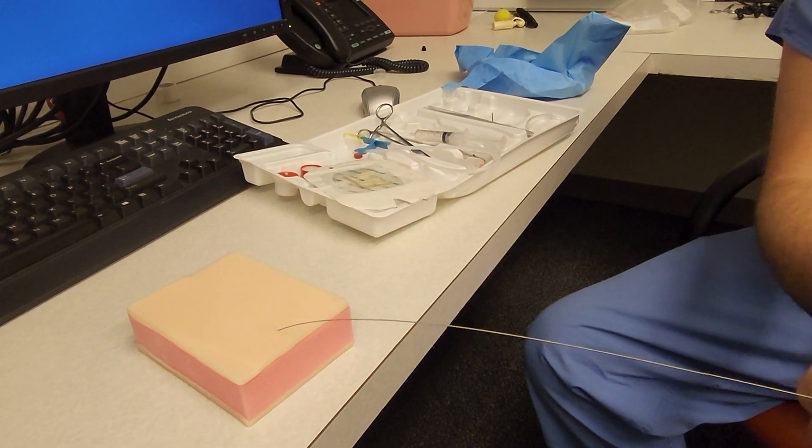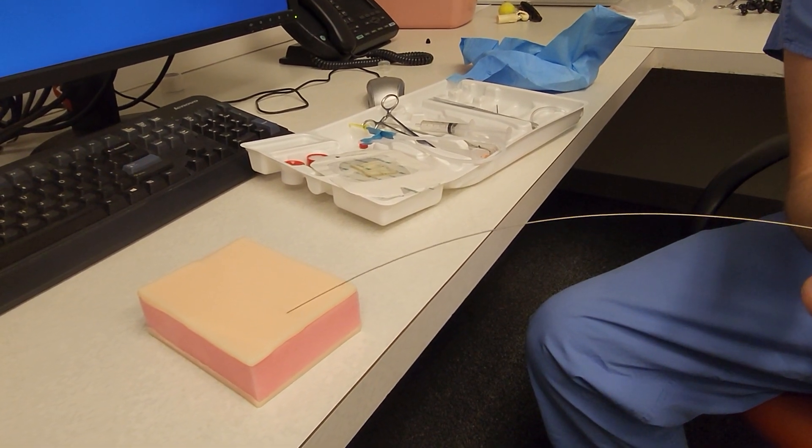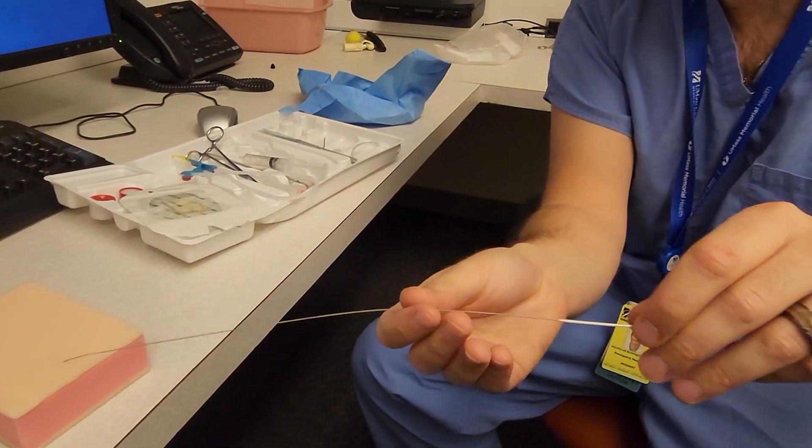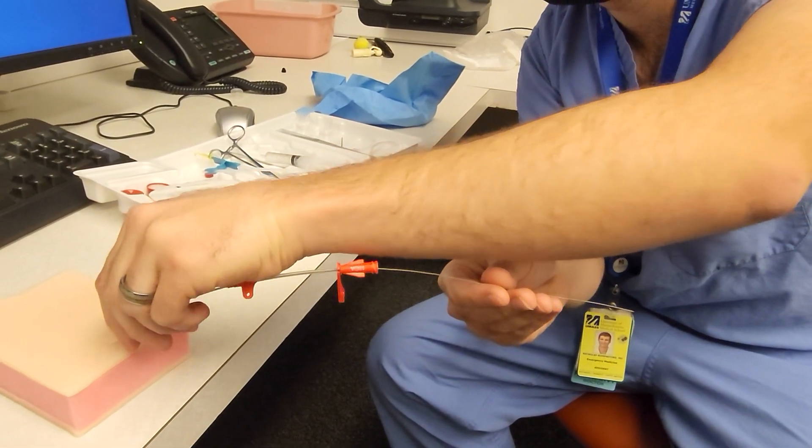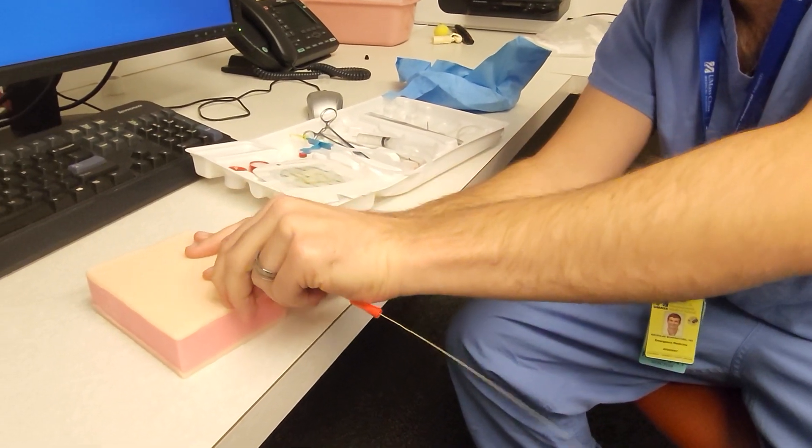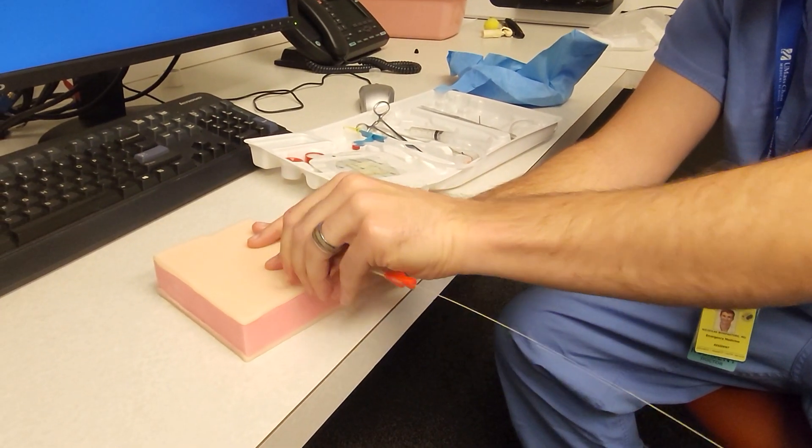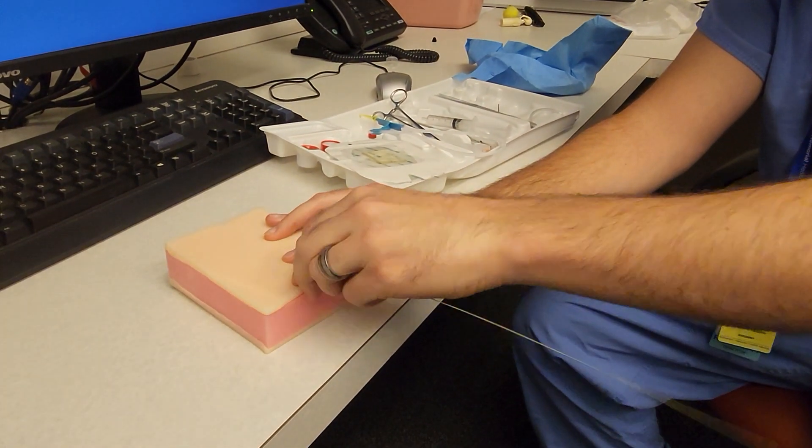And then take your arterial line, thread it over the wire so it's snug.